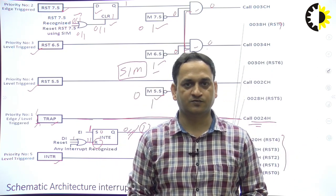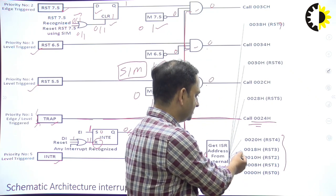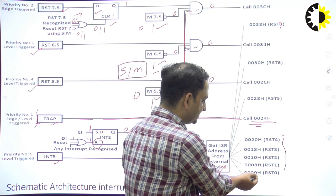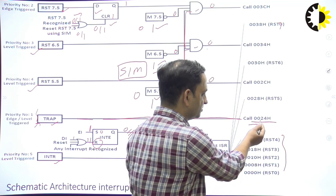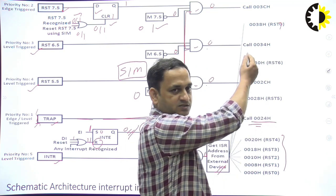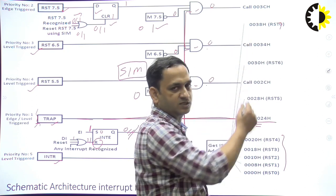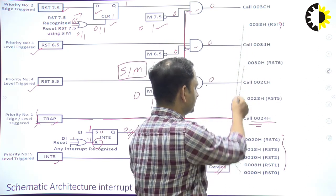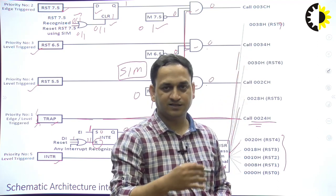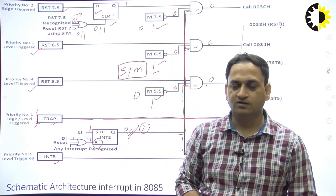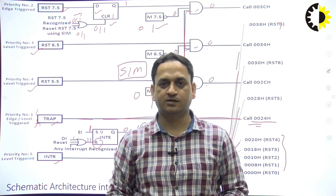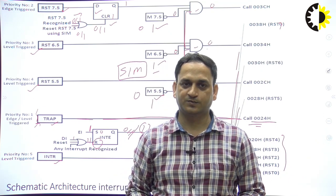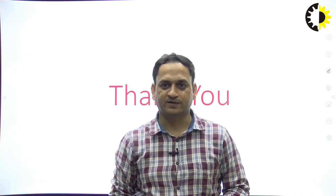I hope this is clear to all of you. The addresses shown — 0, 8, 10, 18, 20, 24 — are in increasing order of sequence, which is why the arrow looks like that. These are the increasing order sequences. I hope this is clear to all of you regarding how to generate interrupts in the 8085 microprocessor. Thank you very much.